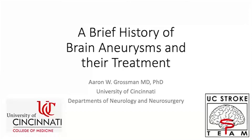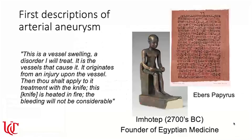Jumping right into a brief history of brain aneurysms and their treatment. The first descriptions of arterial aneurysms were by Egyptian physician Imhotep in 2700 BC. He wrote on the Ebers Papyrus: 'There is a vessel swelling, a disorder I will treat. It is the vessels that cause it. It originates from an injury upon the vessel. Then thou shalt apply a treatment with the knife. This knife is heated in fire. The bleeding will not be considerable.' Well, thank God we've moved on from there.